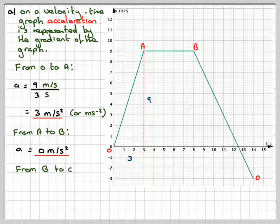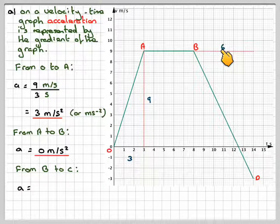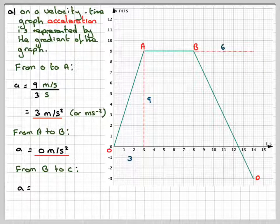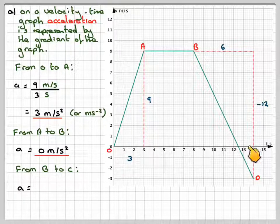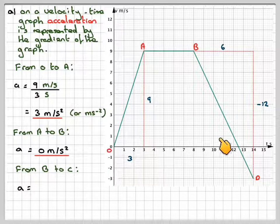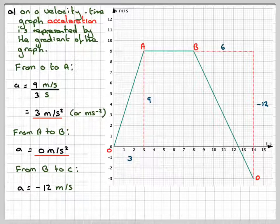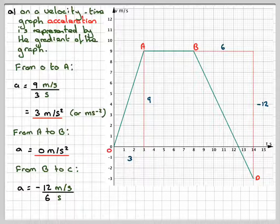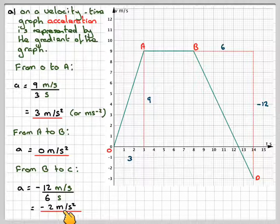In the final part of the journey, we notice that the gradient is negative. Drawing a little triangle, the time span is six seconds (from eight to fourteen). The velocity goes from nine down to minus three — a change of minus twelve. So the acceleration is minus twelve metres per second divided by six seconds, which gives an acceleration of minus two metres per second squared.